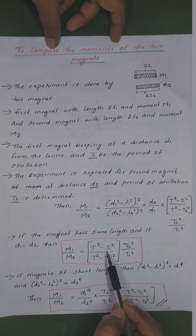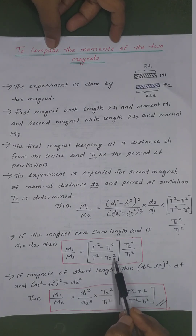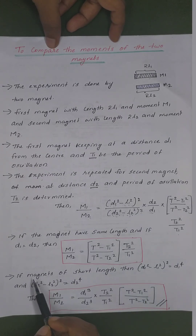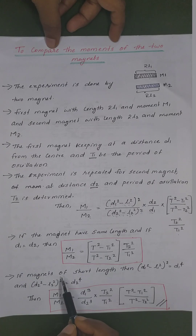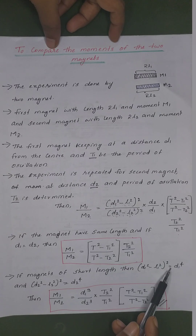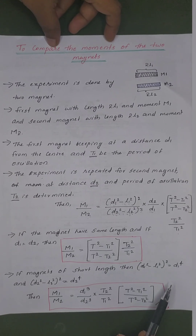T2 minus T1 squared divided by T2 minus T2 squared, into T2 squared by T1 squared. If the magnet is of short length, then D1 squared minus L1 squared, the whole square, is equal to D1 raised to 4.